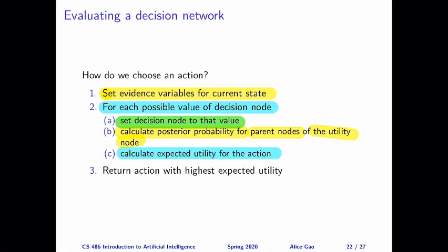Think of this block as: for each possible value combination of the decision nodes, we calculate the expected utility for that combination of actions. Then we compare all actions by their expected utility and pick the one with the highest. To summarize the entire procedure in one sentence: for each set of possible decisions, calculate the expected utility, then choose the set of decisions that maximizes expected utility.